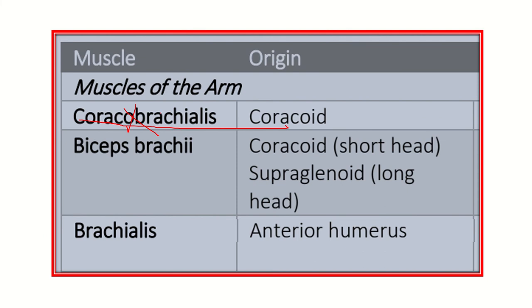Biceps brachii and brachialis are the anterior arm muscles which reach up to the elbow joint, so our answer will be within these two muscles. Biceps brachii arises from the coracoid process (short head) and supraglenoid area (long head). Brachialis arises from the anterior surface of the humerus.